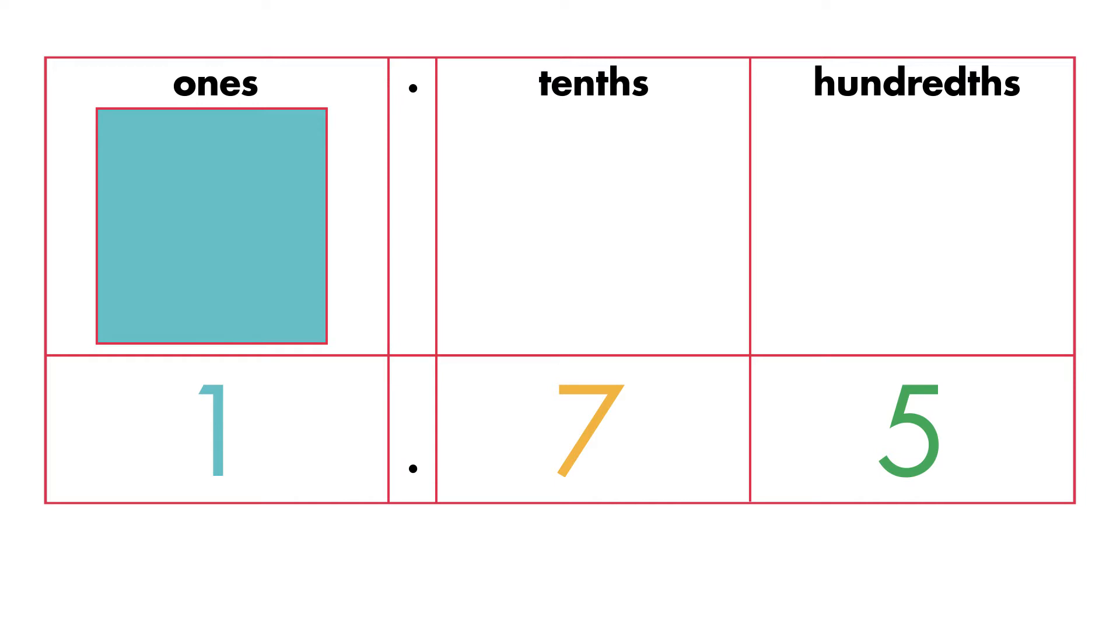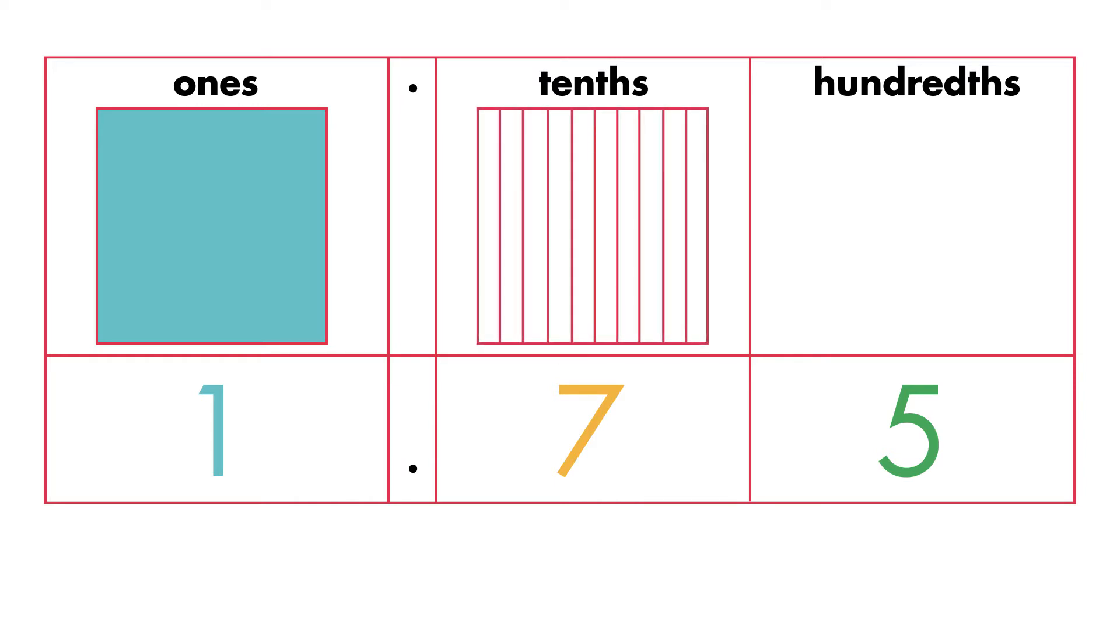To model tenths, we divide one whole unit into ten equal parts. 1 and 75 hundredths has 7 tenths. We shade 7 tenths in the model.